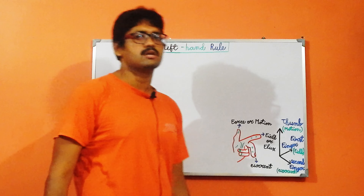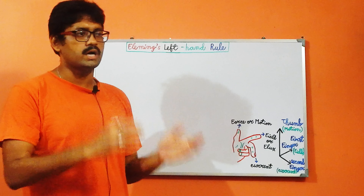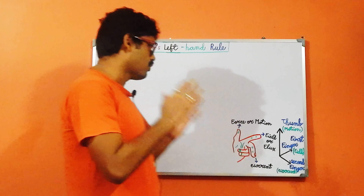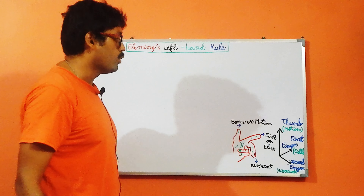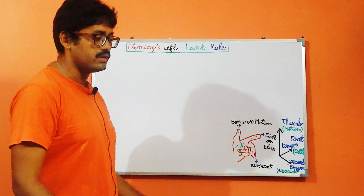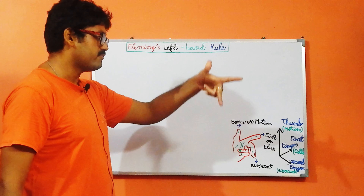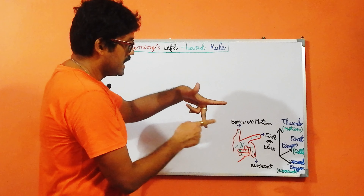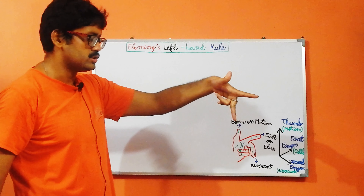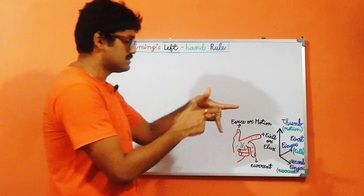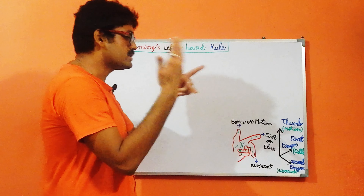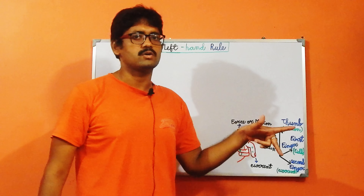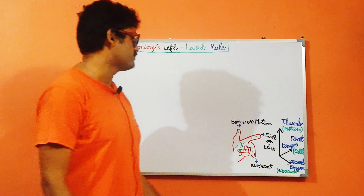If the direction of the current and the direction of the field are given and you want to find the direction of the magnetic force on that conductor, the configuration is simple: just align your left hand so the first finger points in the direction of the field and the second finger points in the direction of the current. The thumb will then give you the direction of the force on the intended conductor. This is all about Fleming's Left Hand Rule.